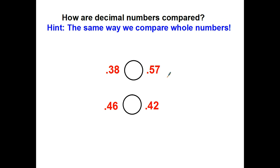How are decimal numbers compared? Good news. The way we compare decimal numbers is exactly the same way we compare whole numbers. We look at the first digit and then move to the right each digit to see which one is greater than the other. So right here, I've got 3 tenths and right here, I've got 5 tenths. And 5 tenths is bigger than 3 tenths. Would you rather have 57 cents or 38 cents? That's not hard.